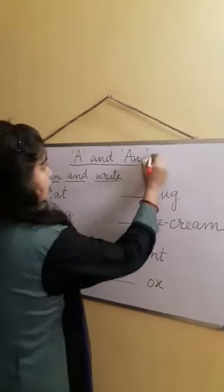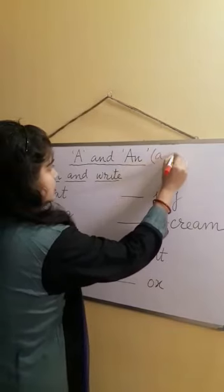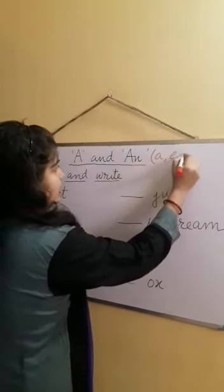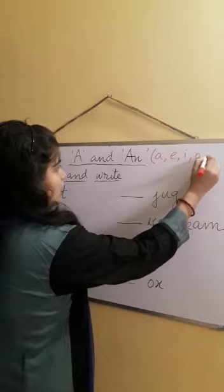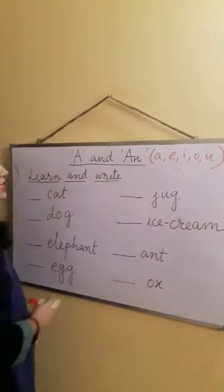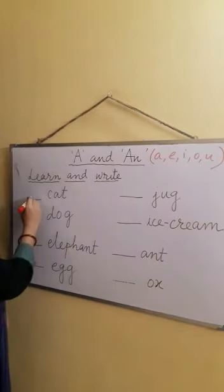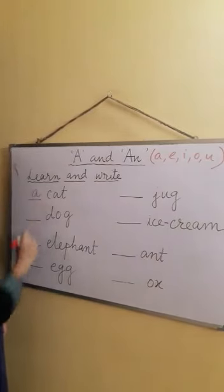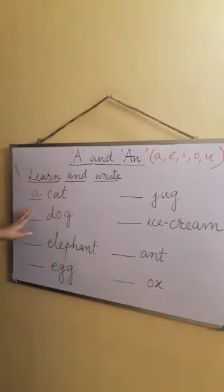You have to keep in mind for An, you have to see if there is A, E, I, O, or U. So C is not from all these alphabets, so here we will use A. It is a cat.